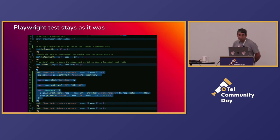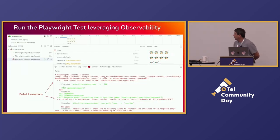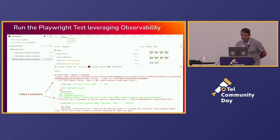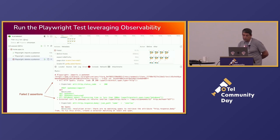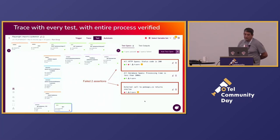We've kept the Playwright test just as it was — it clicks on the button, enters the ID, and then waits for some results. But when we run it now, the Playwright test gets some additional information. It runs the trace-based test using the trace that was generated. In this case, it's showing us that two of the assertions failed: the assertion saying we should get status code 200 for all HTTP spans — one of them failed — and the very specific one saying we should get a certain response when we call this API also failed.